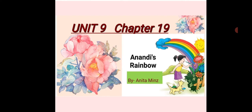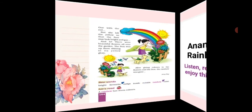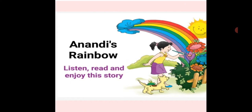Good morning students, welcome back once again. Today we will continue with Unit 9, Chapter 19: Anandi's Rainbow. Open your books to page number 103. We will read the story slowly and nicely — it's story time! The name of the story is Anandi's Rainbow. Listen, read, and enjoy.